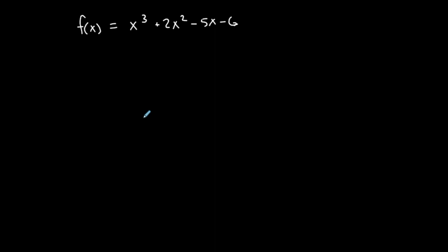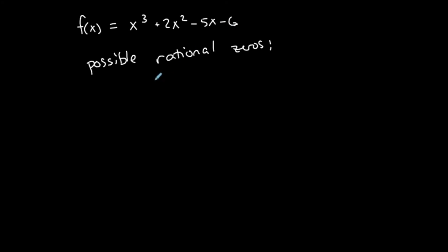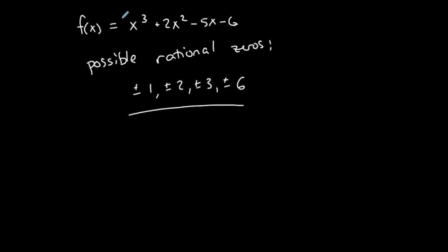Here's another third degree polynomial function. I'm going to use the Rational Zeros Theorem to list the possible rational zeros. Take all the factors of the constant term — here the constant term is negative 6, so 1, 2, 3, and 6 are factors. Then take all the factors of the leading coefficient, which here is 1. So we only divide by 1, which is nice and easy. 1 over 1 is 1; 2 over 1 is 2; 3 over 1 is 3; 6 over 1 is 6.